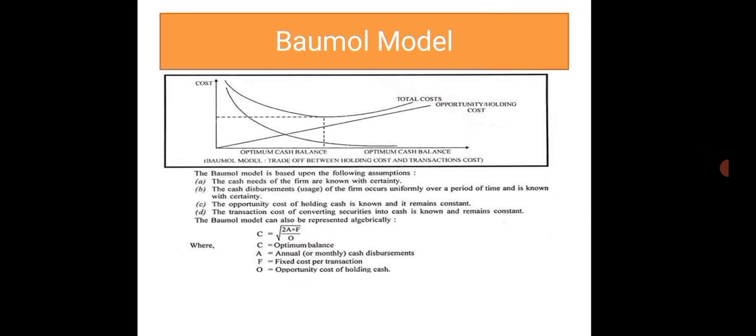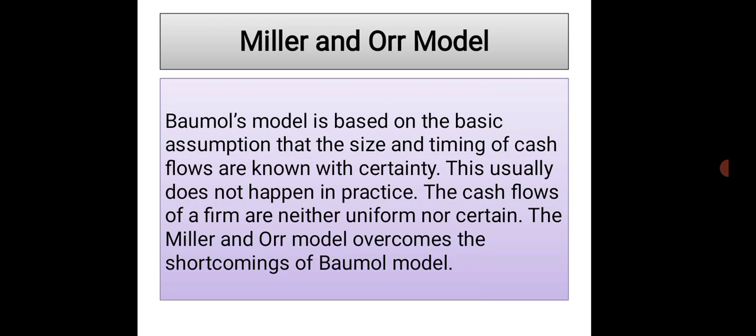Another model is the Miller and Orr model. The Baumol model is based on the assumption that the size and timing of cash flows are known with certainty. This usually does not happen in practice. The cash inflows of the firm are neither uniform nor certain. The Miller and Orr model overcomes the shortcomings of Baumol model.